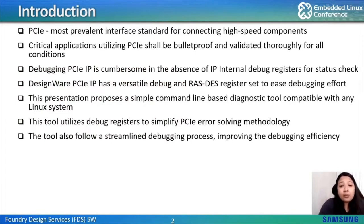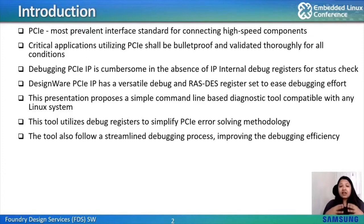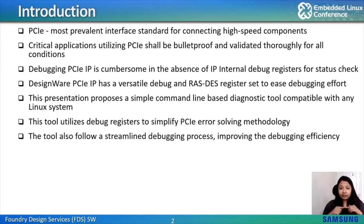Peripheral component interconnect express, or PCIe, is a serial expansion bus standard for connecting a computer to one or more peripheral devices. Nowadays PCIe has become so common and extensively used to connect devices like graphic cards, NIC cards, SSDs, and many other high performance peripherals. There's an ever-growing need for faster connectivity, higher bandwidth, faster speeds, more lanes, simultaneous data delivery, and shorter channel length to fit into smaller SoCs. The evolution from PCIe Gen 5 to now Gen 6 is happening at an unimaginable rate.